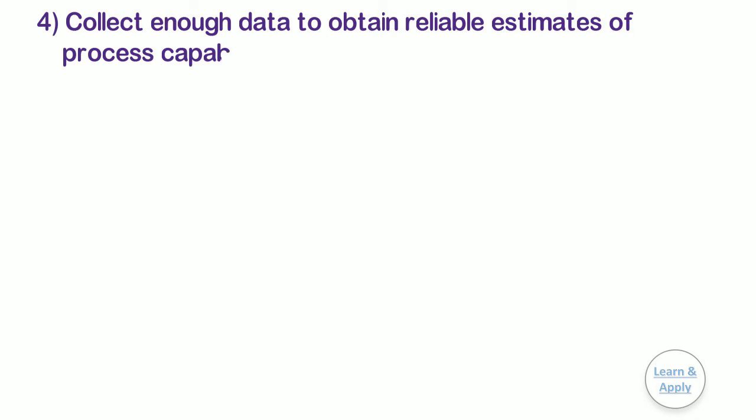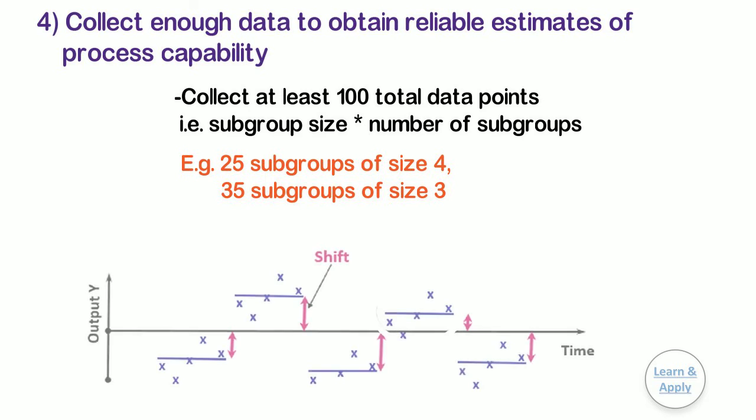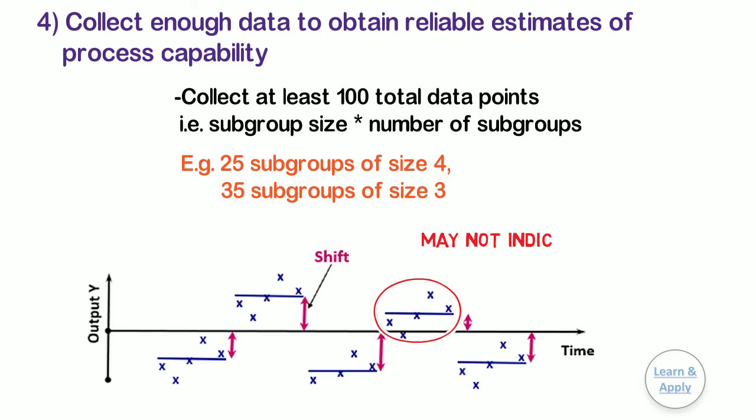Fourth, collect enough data to obtain reliable estimate of process capability. Try to collect at least 100 total data points, subgroup size times number of subgroups, such as 25 subgroups of size 4 or 35 subgroups of size 3. If you do not collect a sufficient amount of data over a long enough period of time, the data may not accurately represent different sources of process variation, and the estimate may not indicate the true capability of your process.